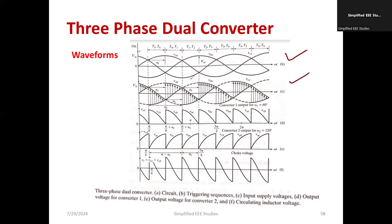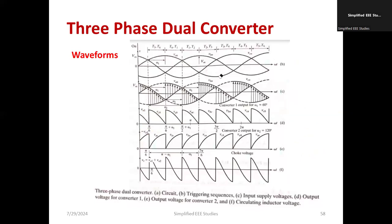Looking at the waveforms, V_AN, V_BN, and V_CN are the line-to-neutral voltages. Correspondingly, the output voltages obtained are V_CB, V_AB, V_AC, V_BC, V_BA, and so on. V_01 is the output voltage of the first converter, and V_02 is the output voltage of the second converter, since both converters are connected back-to-back. We can also observe the waveform of the circulating current. Because there is a voltage difference and V_01 and V_02 are opposite in phase, the circulating current is formed.